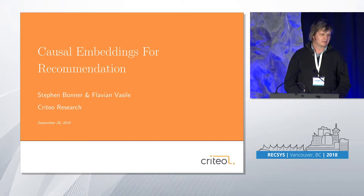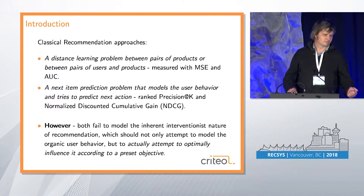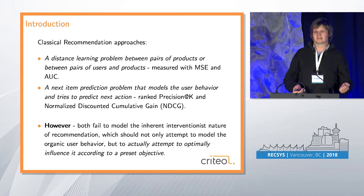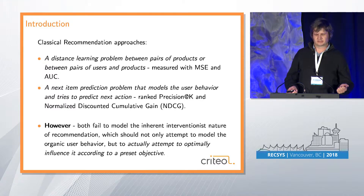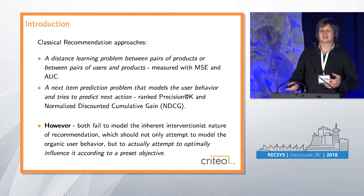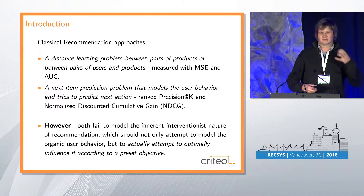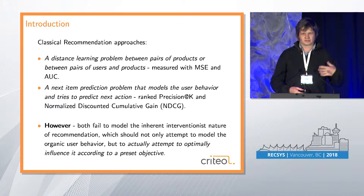A lot of the recommender system literature focuses around a big matrix of users and items. We put a one in all the entries when there was a past visit for that pair and a zero everywhere else. Standard datasets we test on are things like Netflix and MovieLens. We tend to remove some entries and see if we can predict them — something like next item prediction.